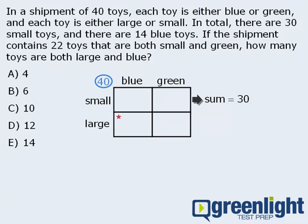Now, if there are 40 toys altogether, and 30 of them are small, then we can conclude that the other 10 toys must be large. Some of these large toys are blue and some are green. And we don't yet know how many of the 10 large toys to place in each box. However, we do know that the sum of these two boxes must be 10, since there must be 10 large toys altogether.